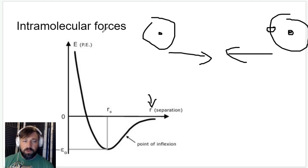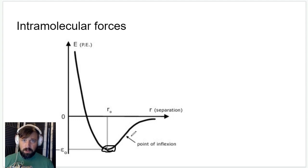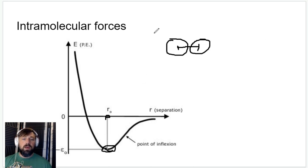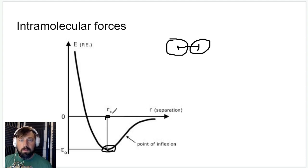So you have a situation where if they're too close together they're repelled, and if they're too far apart they're attracted. The lowest potential energy — the most stable situation — corresponds to a specific distance between the atoms, and that distance is your bond length. It's going to be the radius of the two atoms plus a little bit extra. Looking at this diagram with numbers on it, you should be able to identify the bond length.